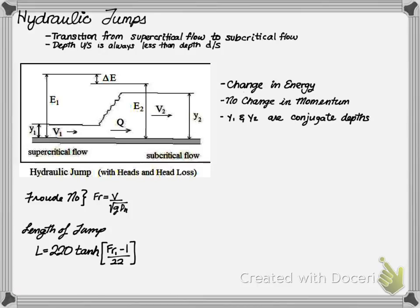When you determine what your supercritical Froude number is, the length of the jump can be determined as the length being equal to 220 times the hyperbolic tangent of the Froude number at 0.1 minus the number 1 divided by 22.